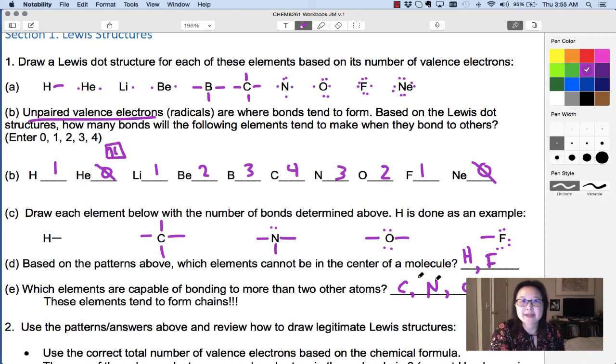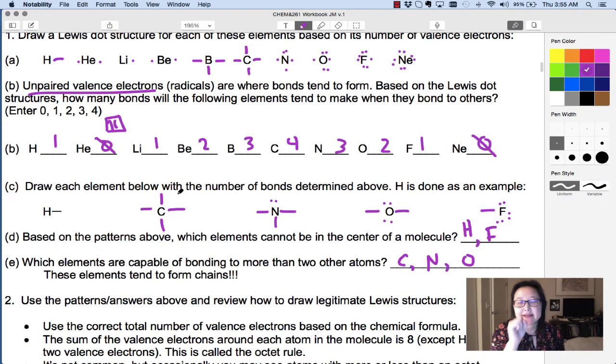The other elements do tend to be in the center. In fact, that's why carbon is such a common and central figure in organic chemistry, because it can bond to so many things. You have so many possibilities for molecules that can be formed.